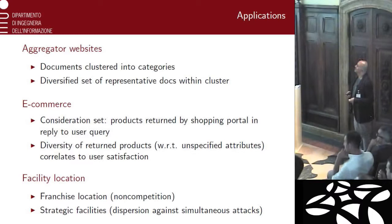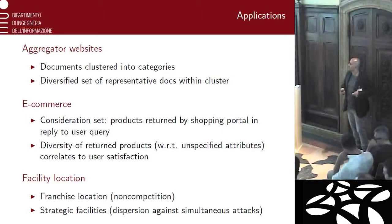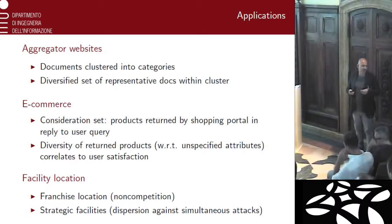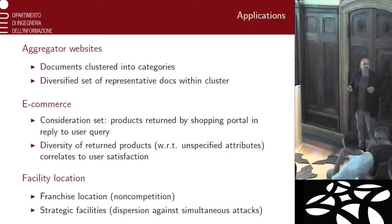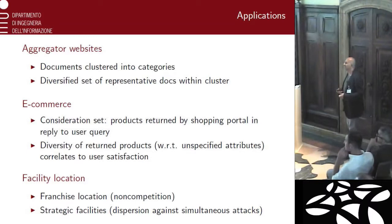In e-commerce, we call the consideration set the products returned by the shopping portal in reply to a specific user query. It has been proved that user satisfaction is heavily correlated to the diversity of the returned products with respect to the unspecified attributes — the attributes that were not specified in the query. So if I specify 'blender', there are many attributes that you don't specify, and you want to be diverse with respect to those unspecified attributes when you show the products.